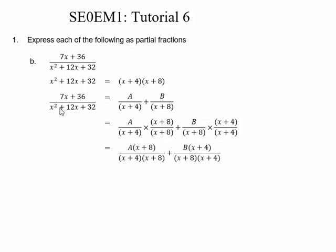The denominator on both sides is now the same, so we can cancel the denominator and get 7x plus 36 equals A times x plus 8 plus B times x plus 4.